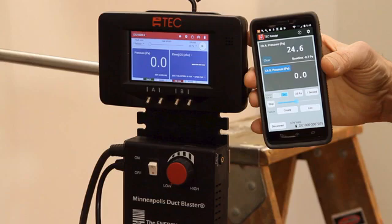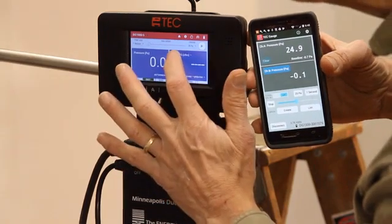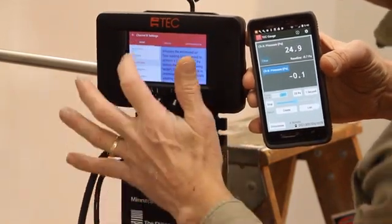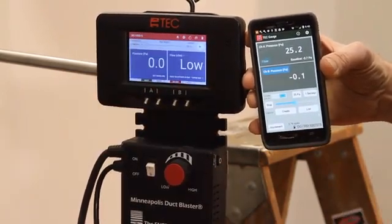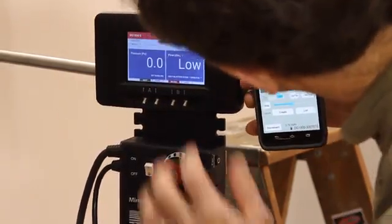On the DG-1000, touch the mode area and change the mode to pressure flow. Confirm that the ring configuration on the gauge matches the ring configuration on the duct blaster fan.